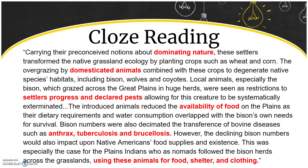Local animals, especially the bison, which grazed across the Great Plains in huge herds, were seen as restrictions, allowing for this creature to be systematically exterminated. The introduced animals reduced food on the plains as their dietary requirements and water consumption overlapped with the bison's own needs for survival. Bison numbers were also decimated by the transference of bovine diseases. However, the declining bison numbers would also impact upon Native Americans' food supplies and existence. This was especially the case for the Plains Indians, who as nomads followed the bison herds across the grasslands.